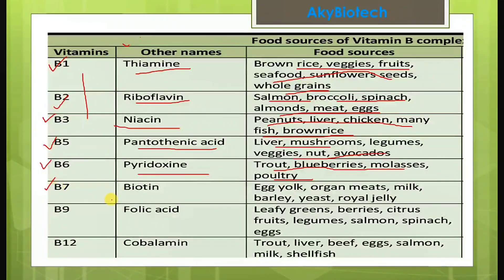Vitamin B7 — biotin — is found in egg yolk, organ meats, milk, barley, yeast, and royal jelly.